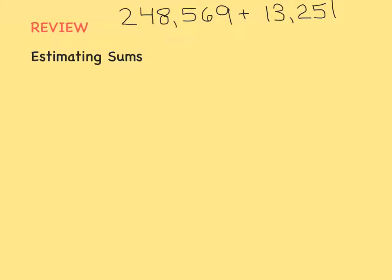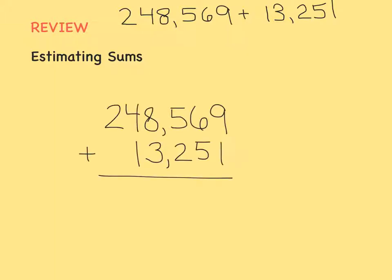Let's find the sum of 248,569 and 13,251. The first thing we do is estimate to get an about answer. When we estimate, we first round each number to the greatest place value they have in common. The greatest place value I see is in the hundred thousandths place, but this number doesn't have anything there. So, the first place value they both have in common is in the ten thousandths place. That's what we'll round to.